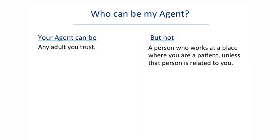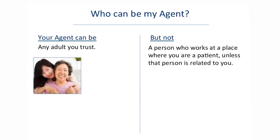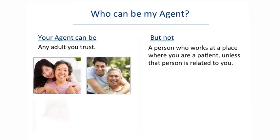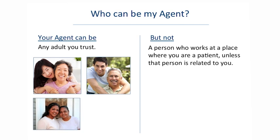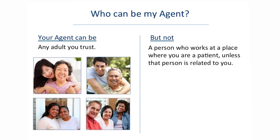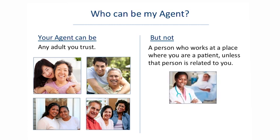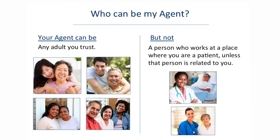Who can be an agent? Massachusetts law makes this easy — it really can be anybody, any competent adult 18 years and older that you trust. Your mother, your daughter, a nephew, an uncle, maybe a neighbor or a coworker, or someone in your faith community or community group. It's your choice, but not a person who works at a place where you are a patient, like a doctor in a hospital or a care provider at a nursing facility where you're a patient, unless that person is related to you by blood, marriage, or adoption.